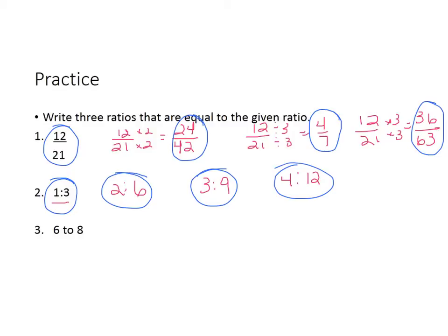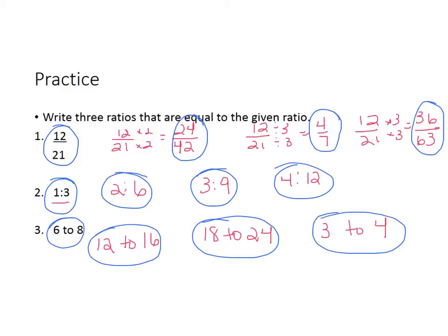6 to 8, again we can multiply them both by the same number. So if we take 6 times 2, we would get 12. And 8 times 2 would be 16. 6 times 3 is 18. 8 times 3 is 24. You can also divide out a common factor. If we divide them both by 2, we would get 3 and 4. So 6 to 8, 12 to 16, 18 to 24, and 3 to 4 are all equal ratios.